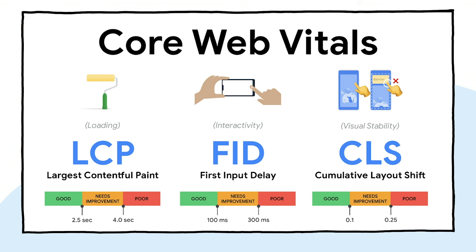These three aspects of user experience are measured using three metrics. First we have Largest Contentful Paint, which measures loading performance. Next up we have First Input Delay, which measures interactivity. And last we've got Cumulative Layout Shift, which measures layout stability. Let's kick things off by talking about Cumulative Layout Shift, or CLS.